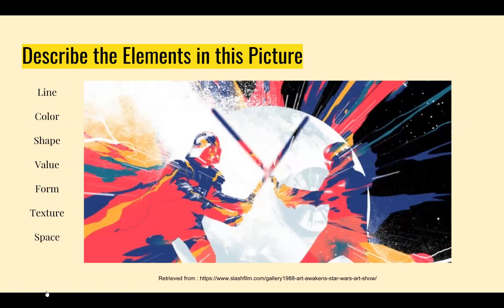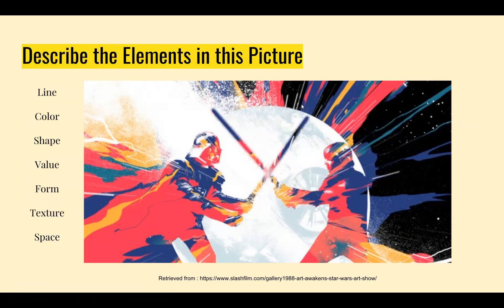We're going to practice by talking about the elements of art in this picture. In this particular picture you can see a variety of lines — primarily straight lines radiating out from the center of a circle. You can also see the illusion of straight lines with the two lightsabers in the middle, and the outline of all the silhouette shapes. The color is very straightforward: you can see red, orange, blue, black, white, and a few variations in between.